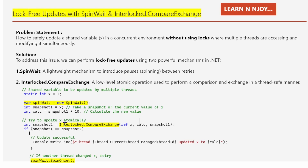Then I'm trying to update X atomically using Interlocked.CompareExchange, passing ref x, calc, and snapshot1. This method attempts to update the shared variable X atomically. It compares the current value of X with snapshot1 — if X is still equal to snapshot1, meaning no other thread has changed it, it automatically updates X to the value of calc, which is the new value. If X has been changed by another thread in the meantime, the update will not happen and the current value of X will be returned to snapshot2. That's what Interlocked.CompareExchange does.